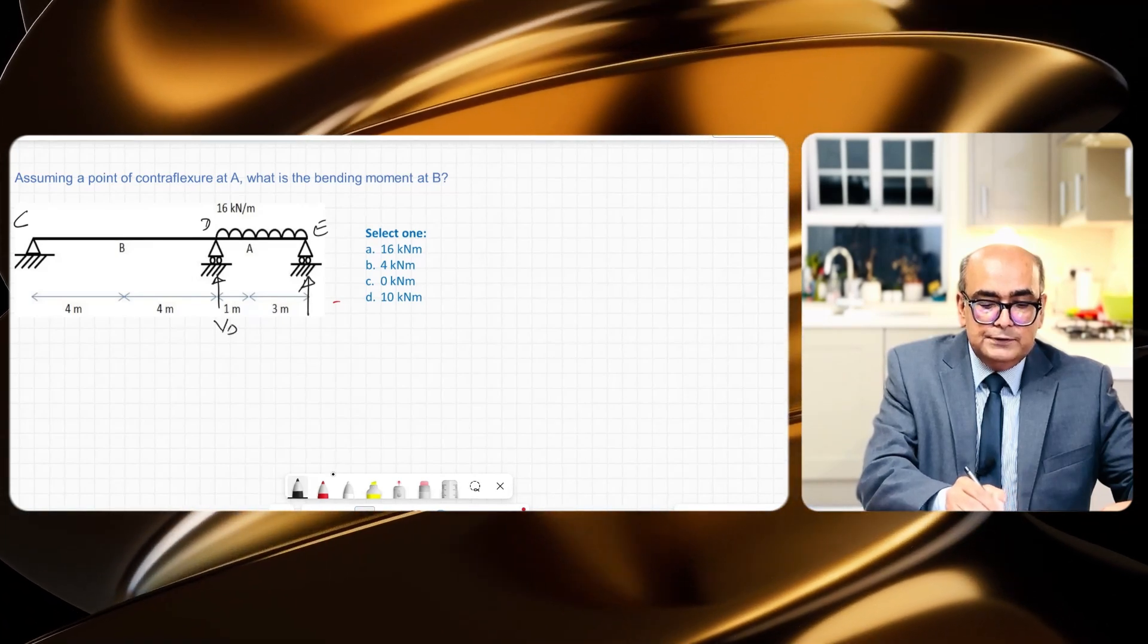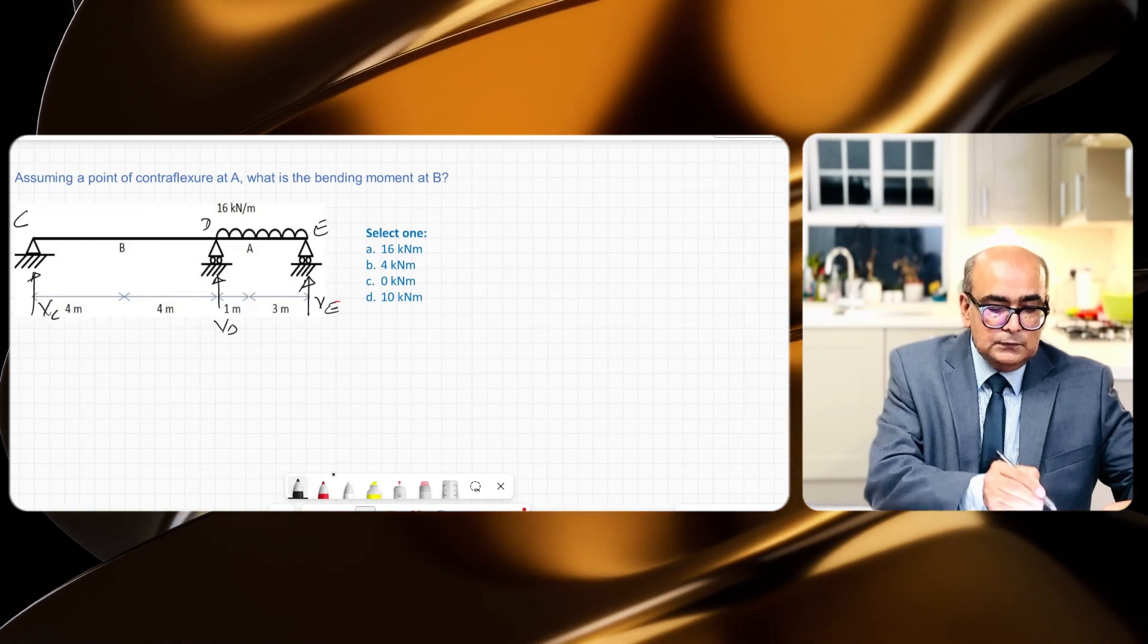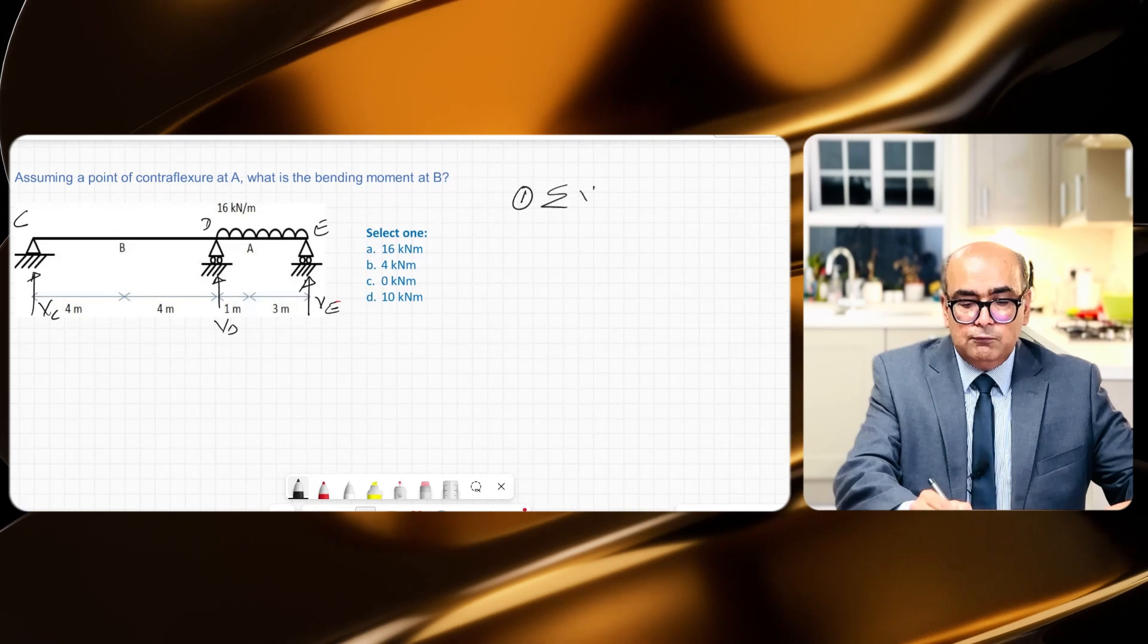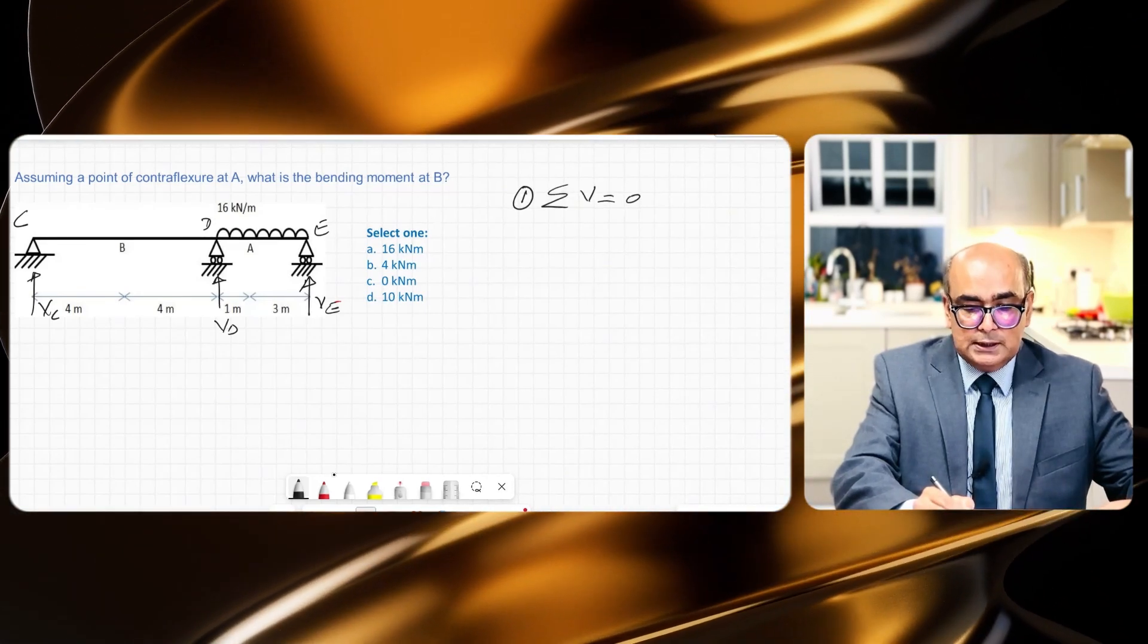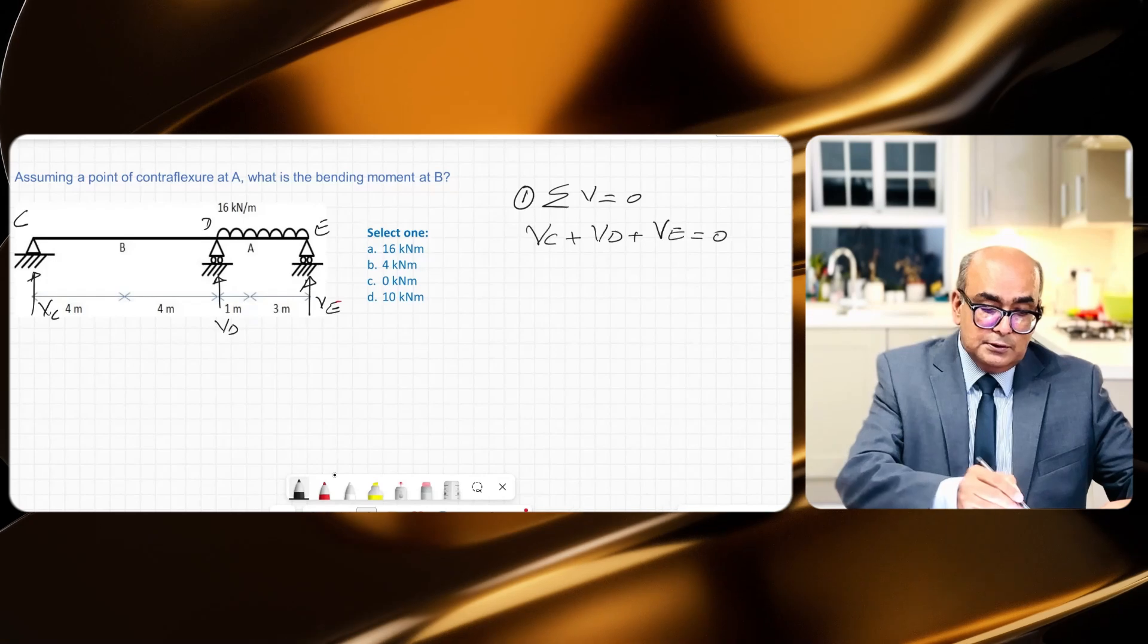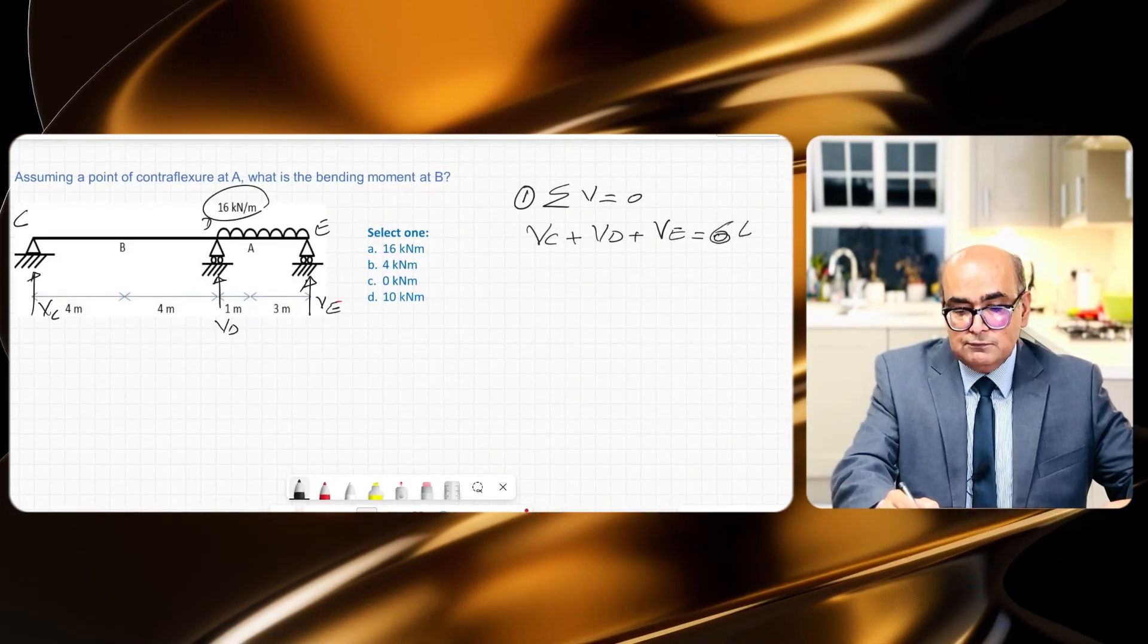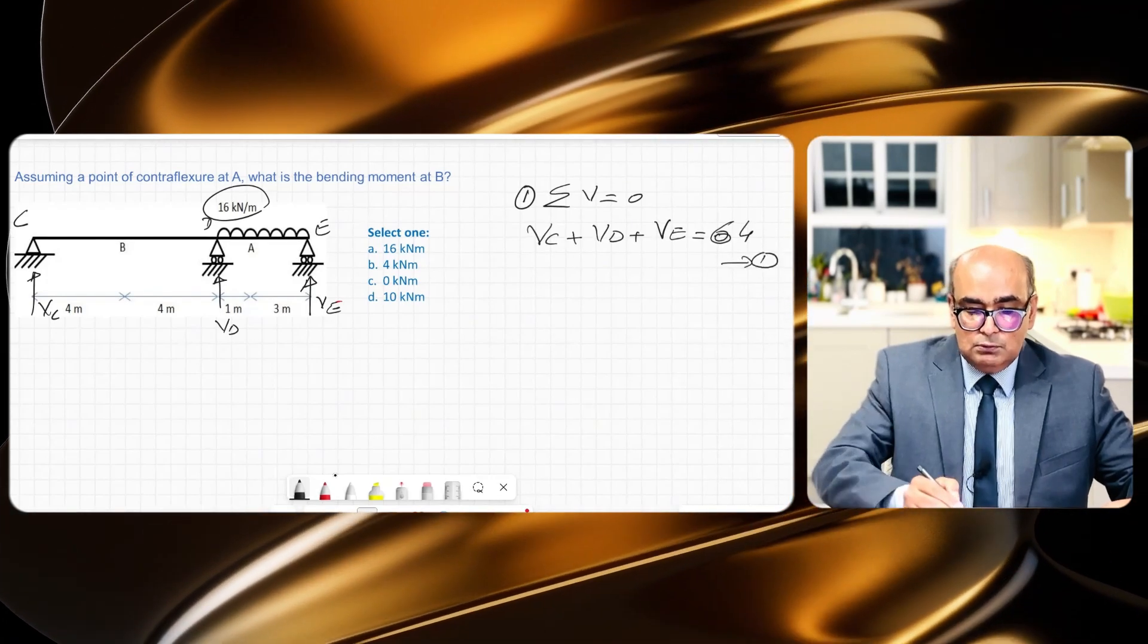Let me call this point as C, this as D, and this point as E. So we have VD, we have VE, and we have VC. The first thing I would say: summation of vertical forces are equal to zero. The vertical forces are vertical reactions, so VC + VD + VE is equal to 16 times 4, we have 64 kN. I call this equation as equation 1.